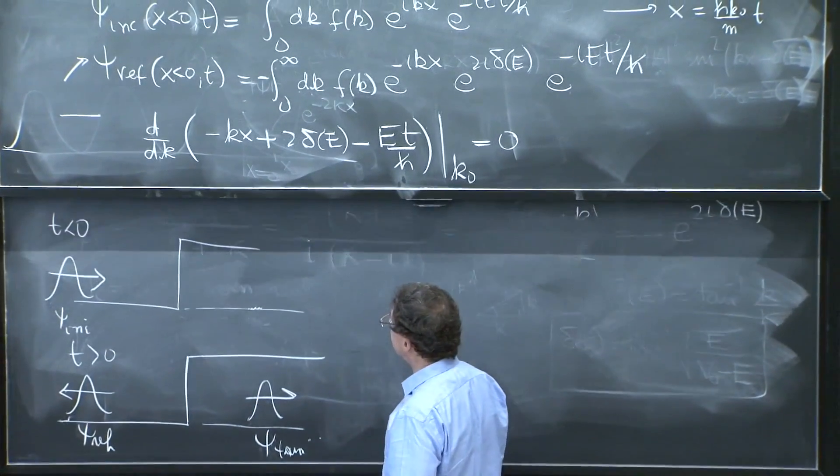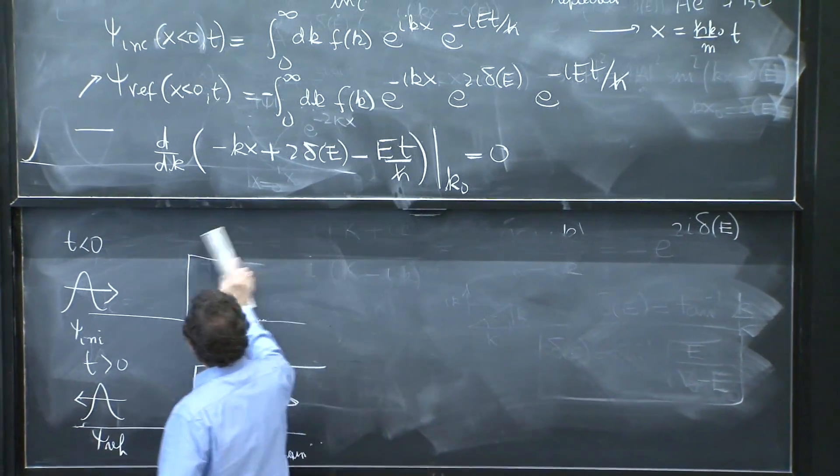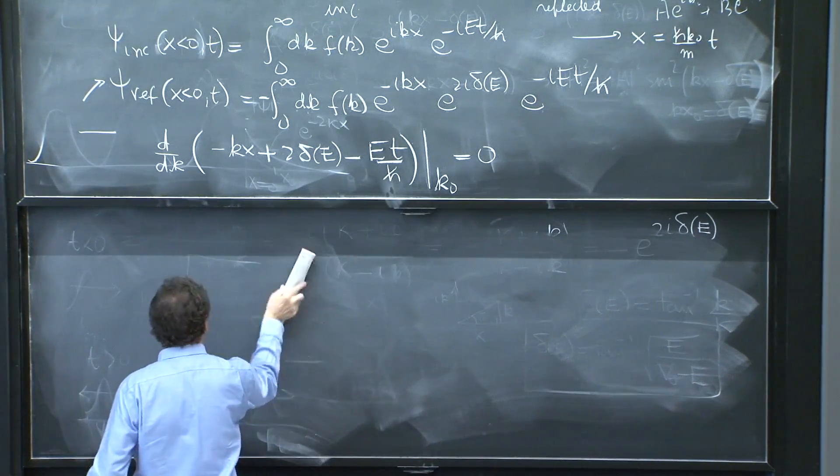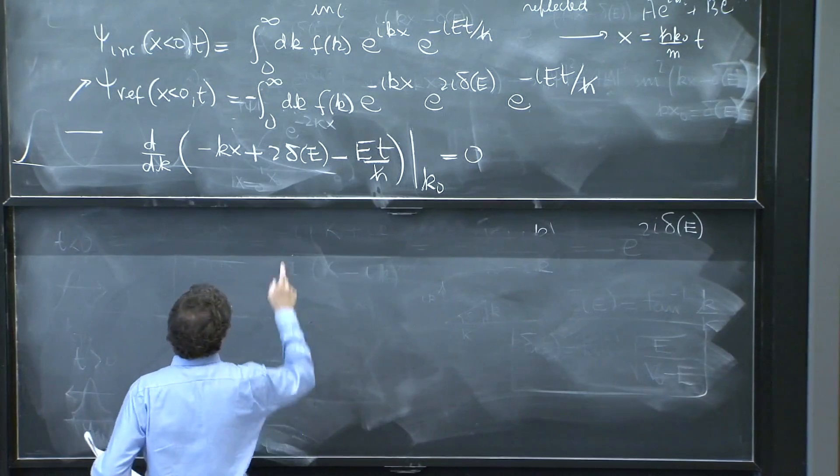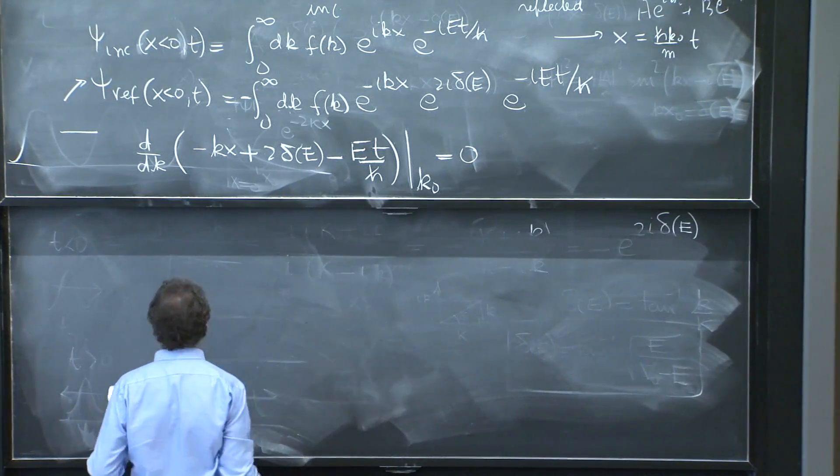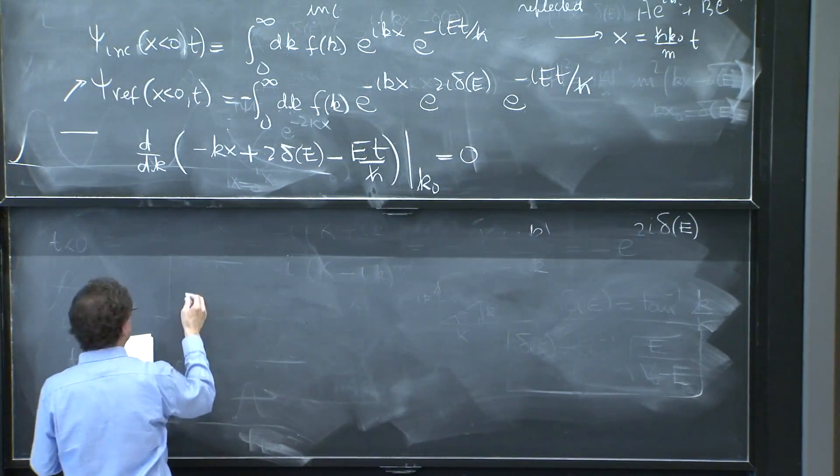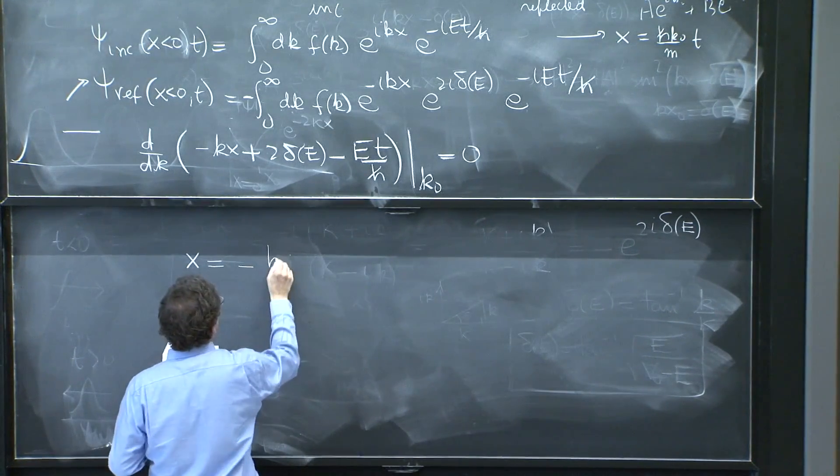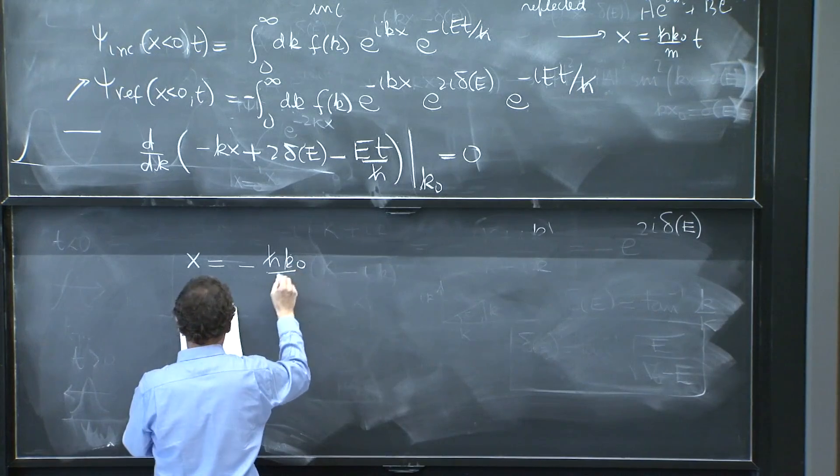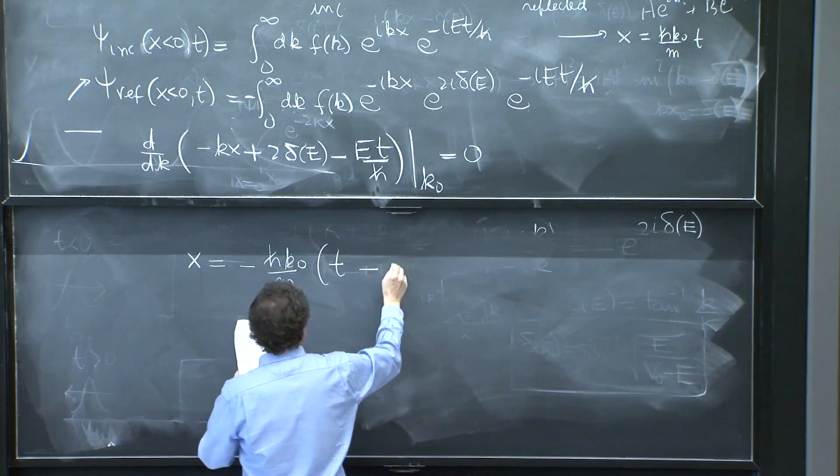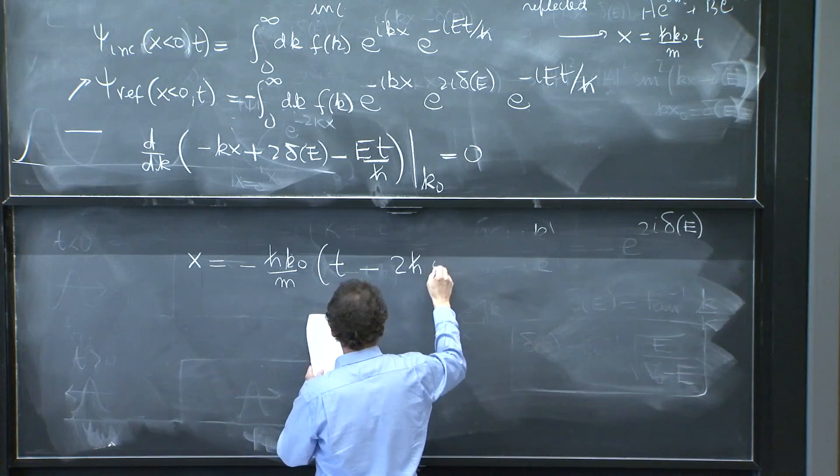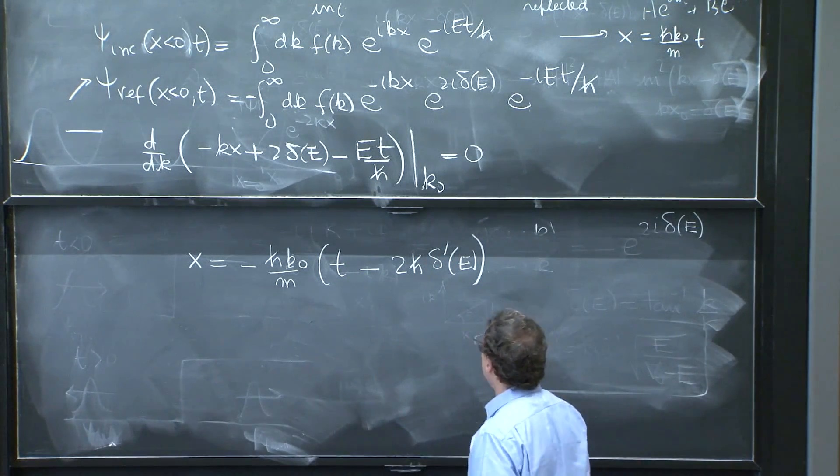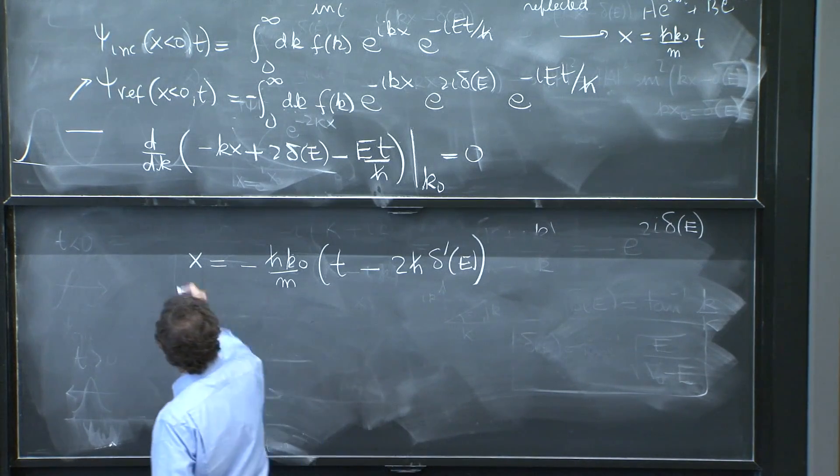Well, when you take the derivative, you have to take the derivative of delta with respect to energy. That's delta prime. And then the derivative of energy with respect to k. Let me save you a little time. The answer is minus h bar k0 over m t minus 2h bar delta prime of e. OK. That's what you get.